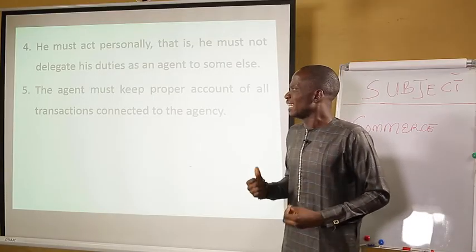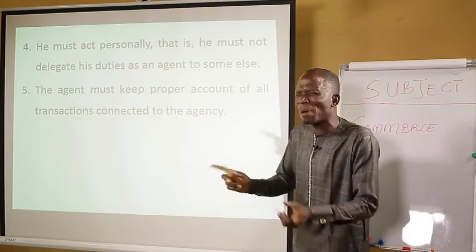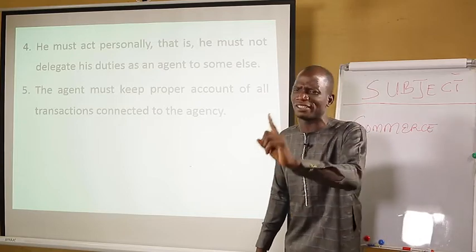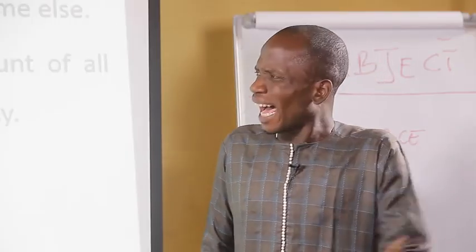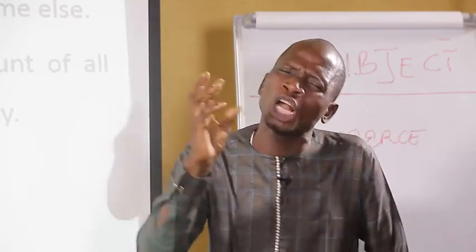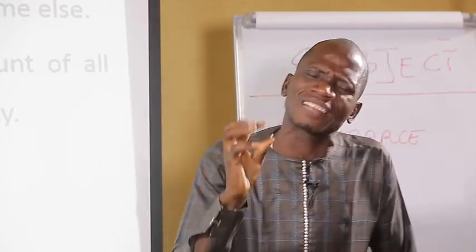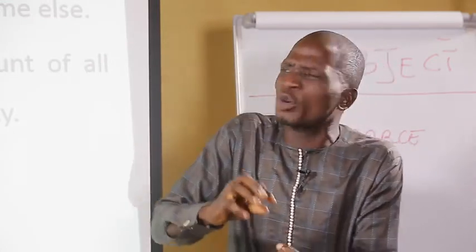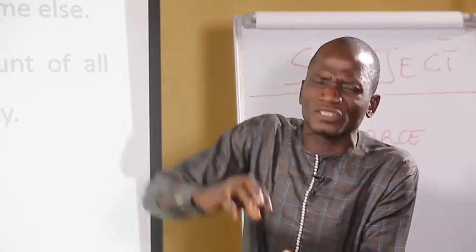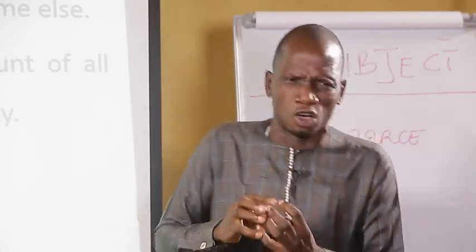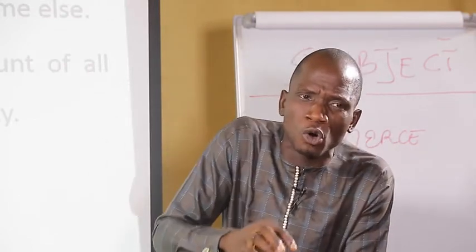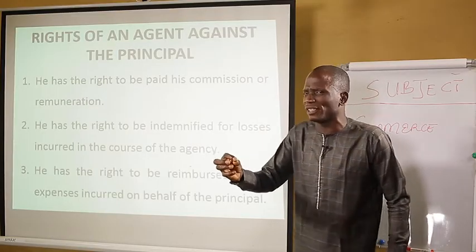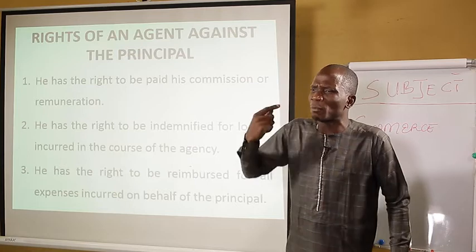The fifth duty is the agent must keep proper accounts of all transactions connected to the agency. An agent must keep proper accounts — all books of financial transactions that concern the business. An agent is expected to keep all those books for proper records, and the books are to be used by his principal. These are some of the duties of an agent to the principal.